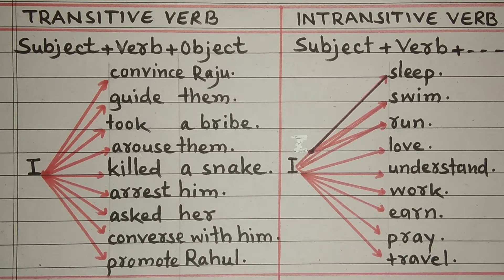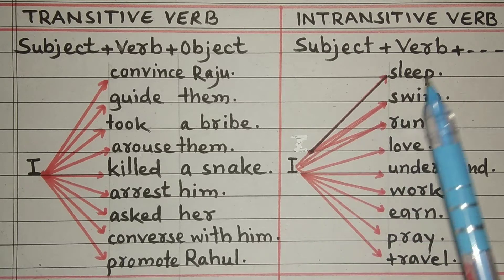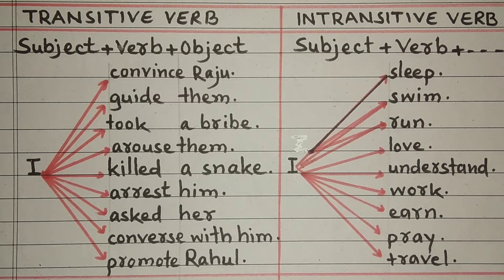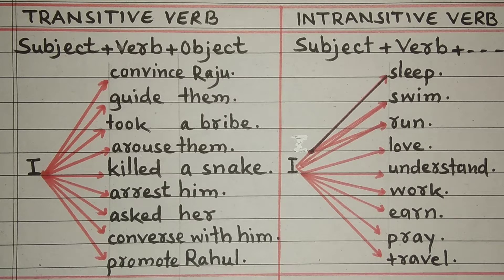Hamne dekha hai ke in verbs ke baad — sota hai, tairta hai — object ki zaroorat nahi padti. Jab verb ke baad object ki zaroorat na padhe, toh wohi intransitive verb hota hai.